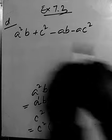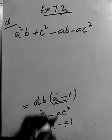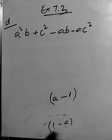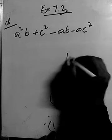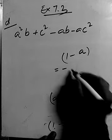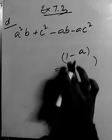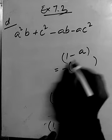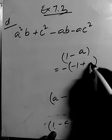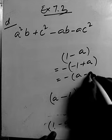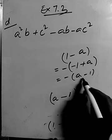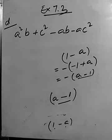We now have AB(A minus 1) and C squared(1 minus A). Notice that (A minus 1) and (1 minus A) are opposite in sign. We can write (1 minus A) as negative of (A minus 1), by taking minus common: minus(A minus 1). That way both groups contain the factor (A minus 1).